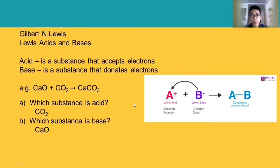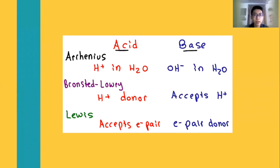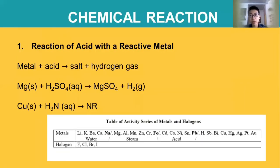So those are the theories of acid and base. To recap: for Arrhenius, acid produces H+ in H2O and base produces hydroxide ion in H2O. For Bronsted-Lowry, acid donates H+ and base accepts H+. For Lewis, acid accepts an electron pair while base donates an electron pair. Now after explaining the theories and introduction, I will continue to chemical reactions of acid and base.